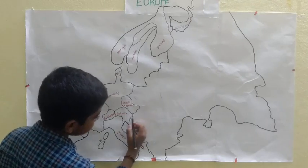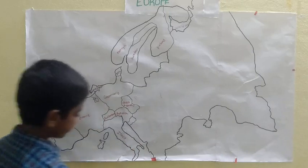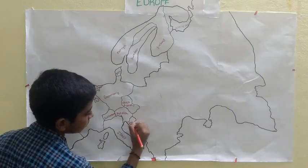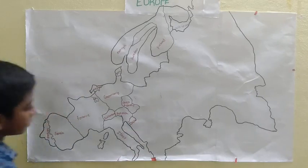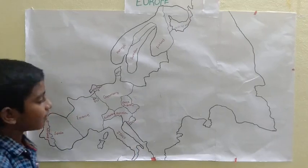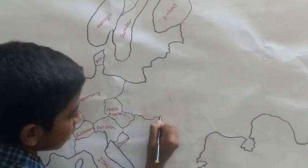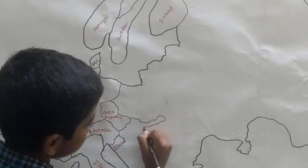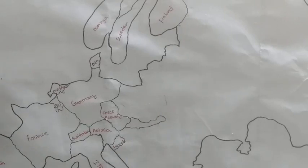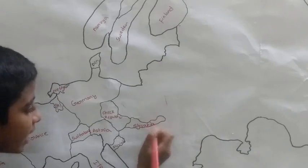Below Austria there is a small country — Slovenia. To the right side of the Czech Republic is Slovakia.